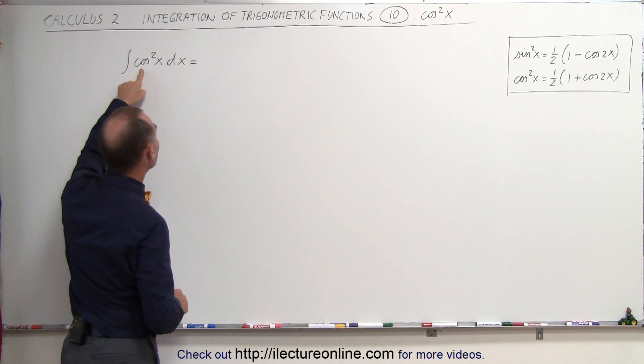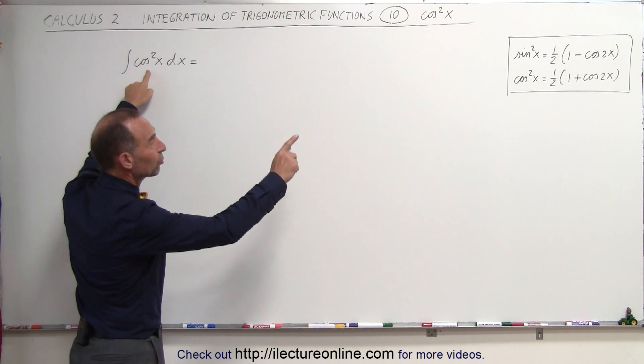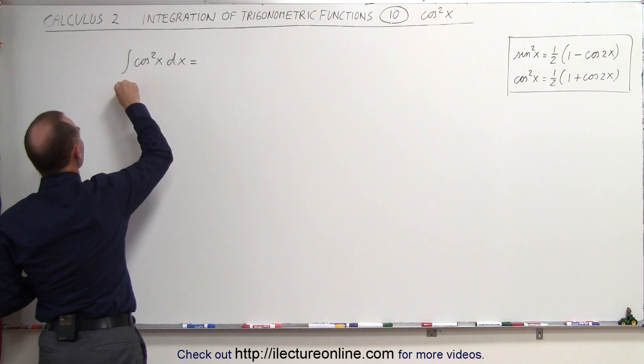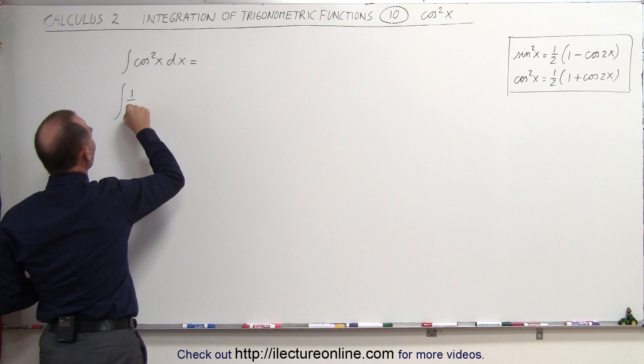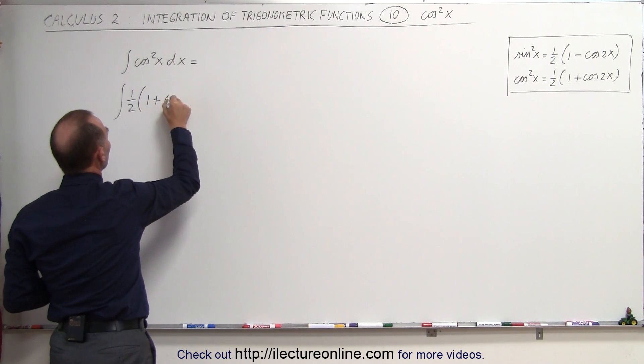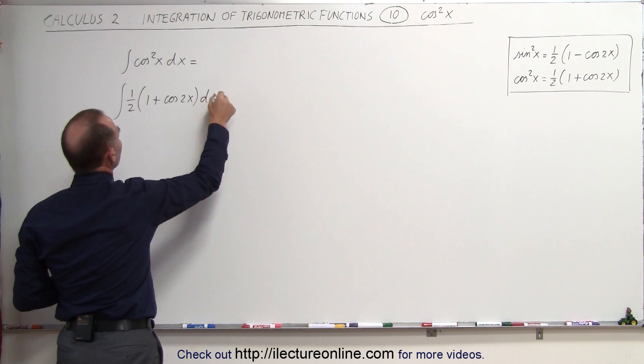So notice here that if we then replace the cosine square of x by its identity, it looks as follows. This is equal to the integral of 1/2 times 1 plus the cosine of 2x times dx.